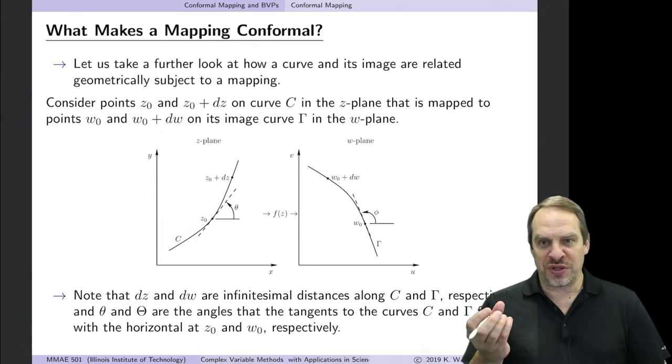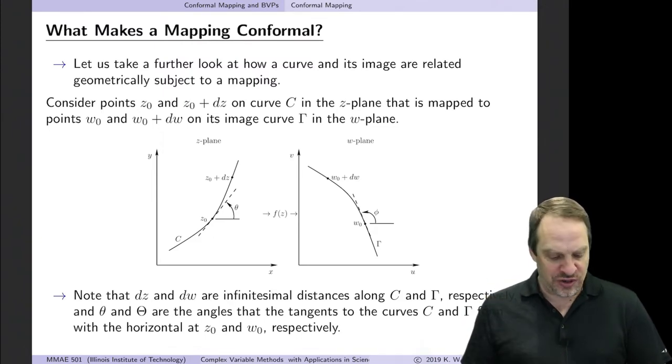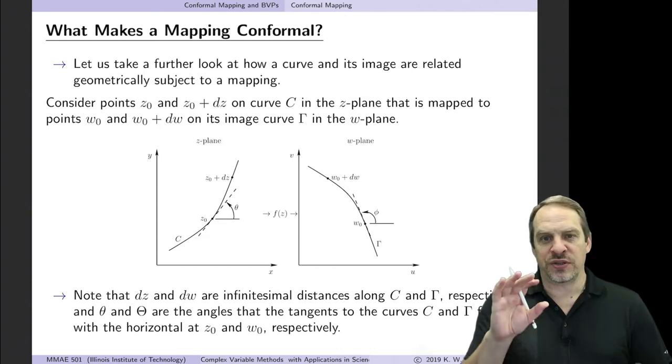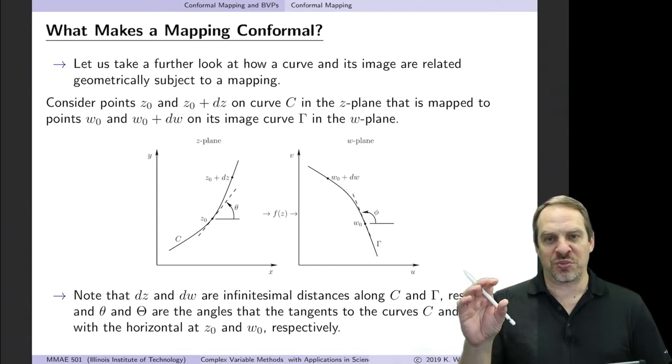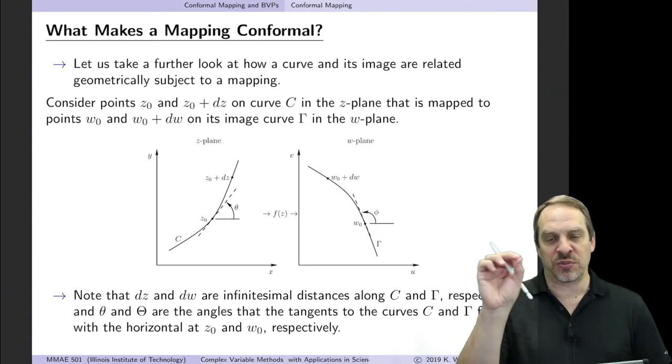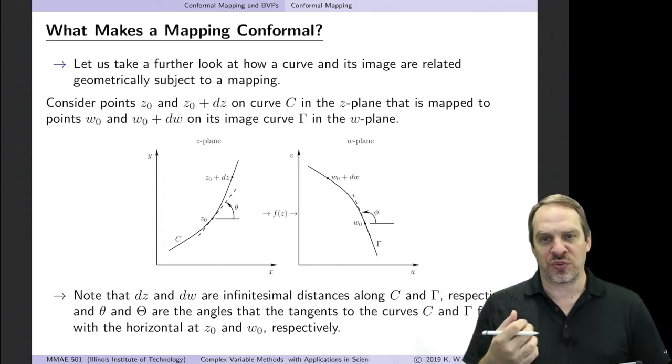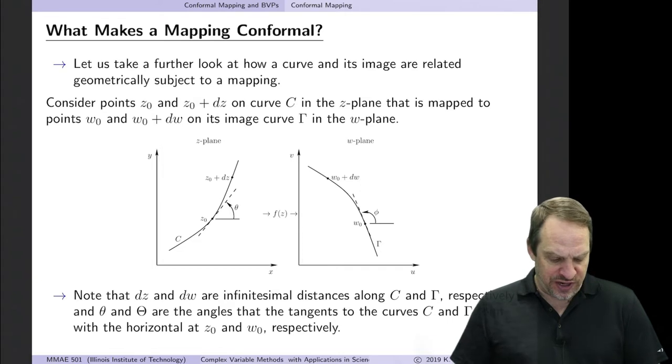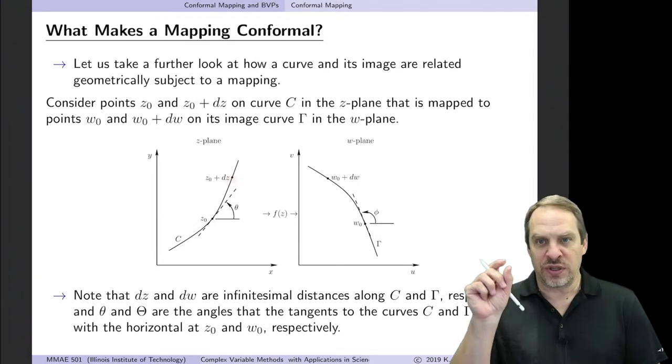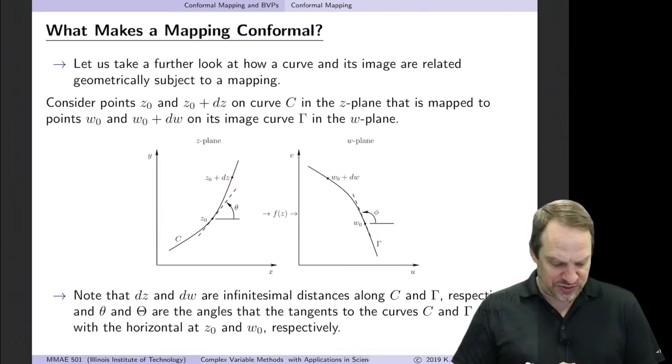So we're going to talk about what it means to be conformal, and we're going to determine a criteria for it to be conformal. Now the difference from our one-to-one analysis is going to be that there we were looking at individual image points. Here we're going to be evaluating entire curves. So what's the image of an entire curve? So let's take a curve C in the z-plane. So we have some curve, generic curve C in the z-plane. It has a point z₀ somewhere on it, and a point z₀ plus dz, an infinitesimal distance away.